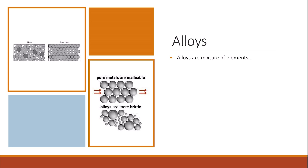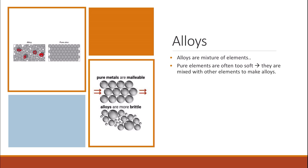Alloys: if you want to give more strength to a metal, you can mix it with another element. An alloy is not a pure metal but a metal mixed with another metal or element. The added element has a different atomic size, which gives strength to the alloy because the layers can no longer move easily past each other. This makes alloys stronger and more brittle, while pure metals are more malleable.